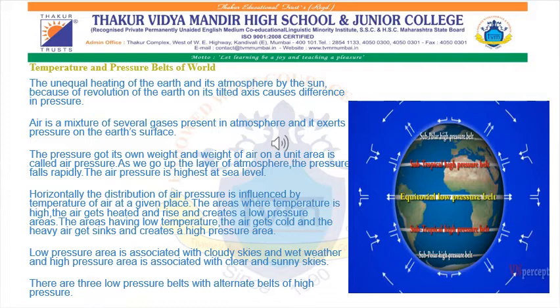Low pressure areas are associated with cloudy skies and wet weather, and high pressure areas are associated with clear and sunny skies. There are three low pressure belts with alternate belts of high pressure.